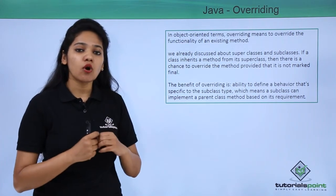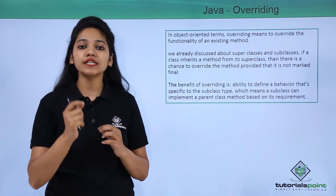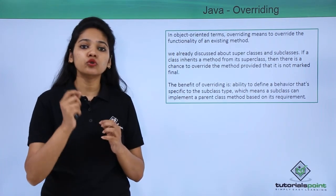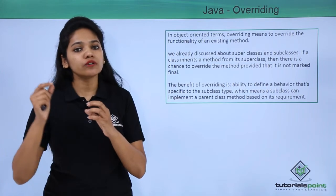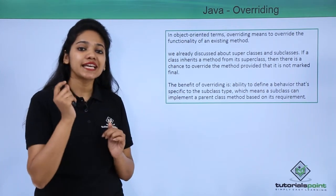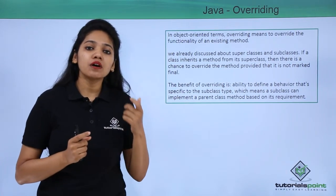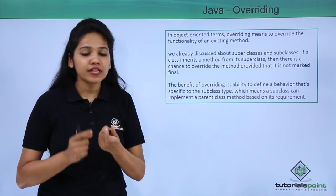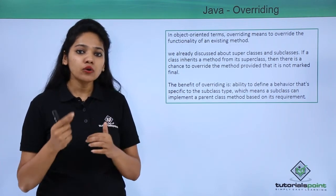This is all about dynamic binding. Dynamic binding is a technique which allows you to assign the base class reference to your child class object — that is, it allows you to assign your super, parent, or base class reference to the child class object.